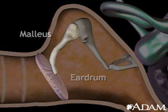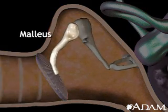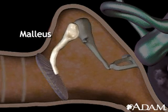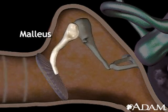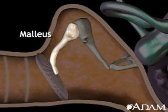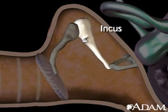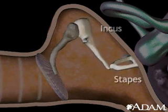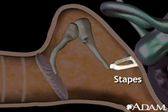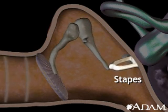That bone is called the malleus, or hammer. As the malleus vibrates, it transmits the sound vibrations to the other two small bones, or ossicles, of the middle ear — the incus and stapes.